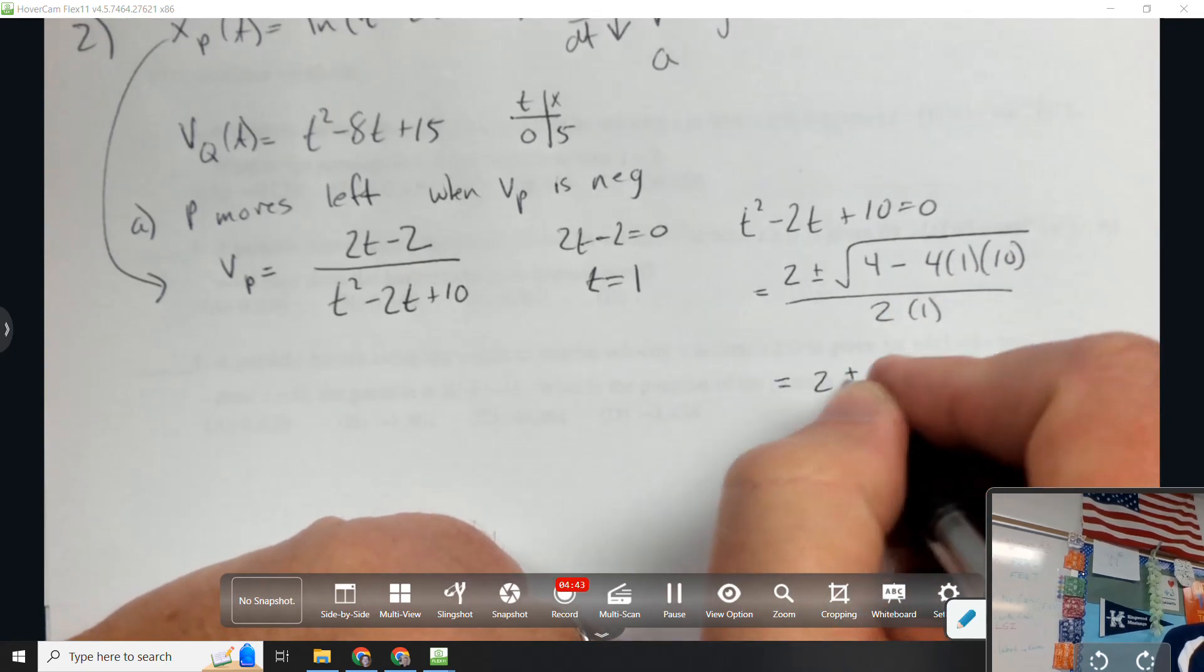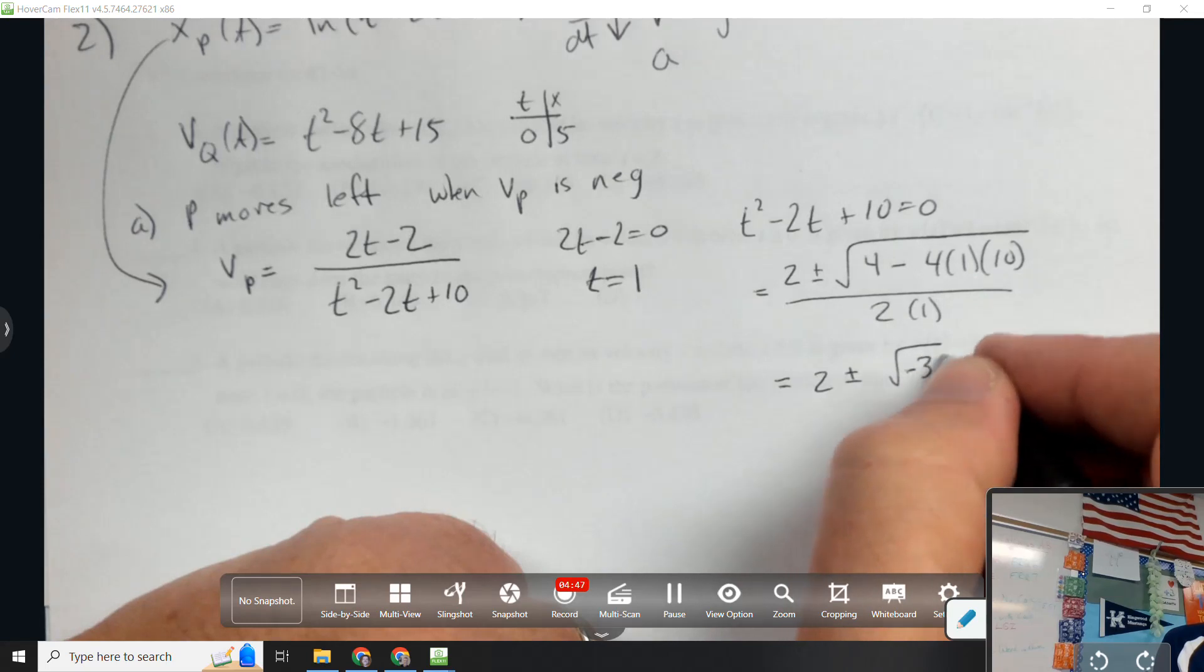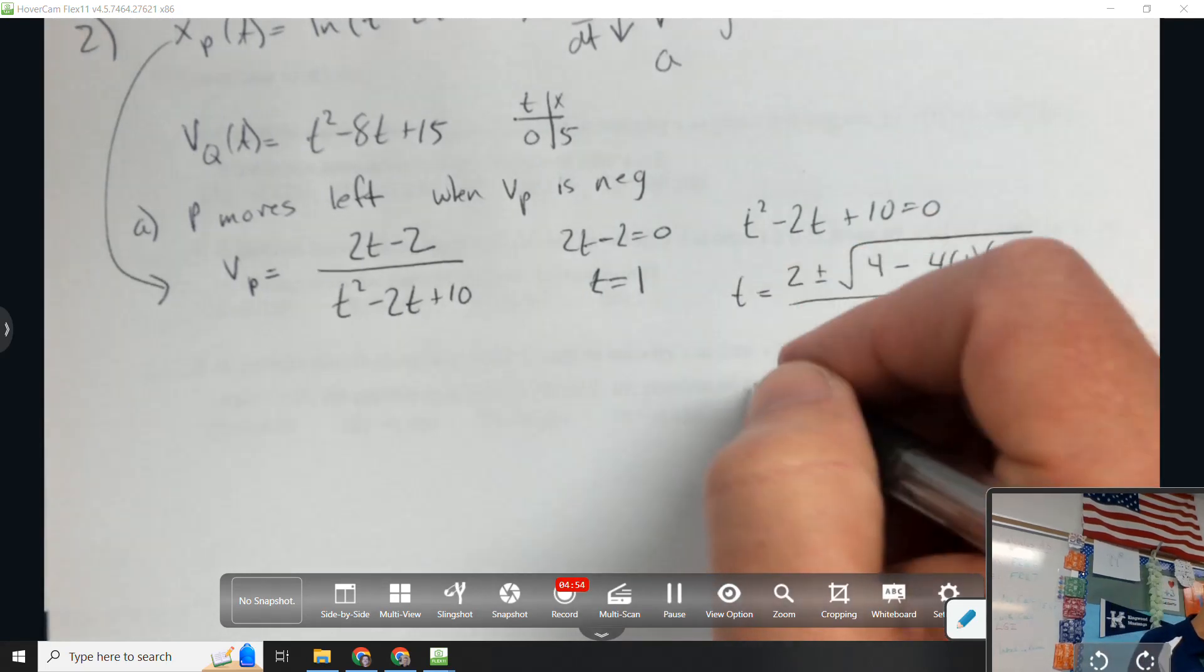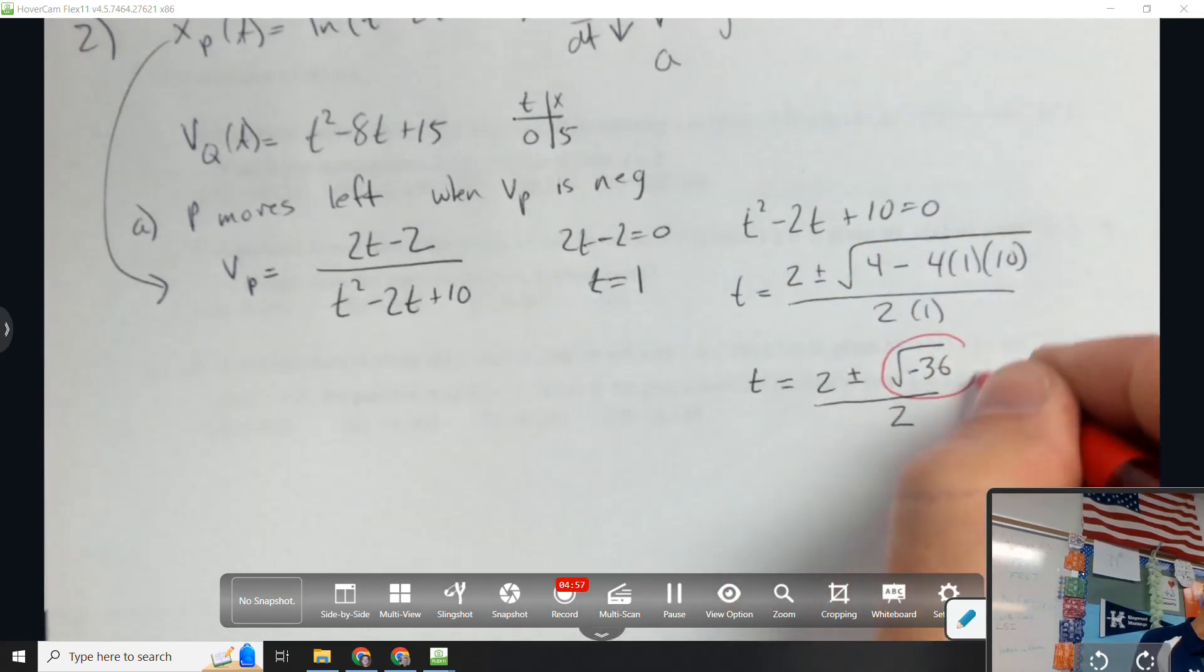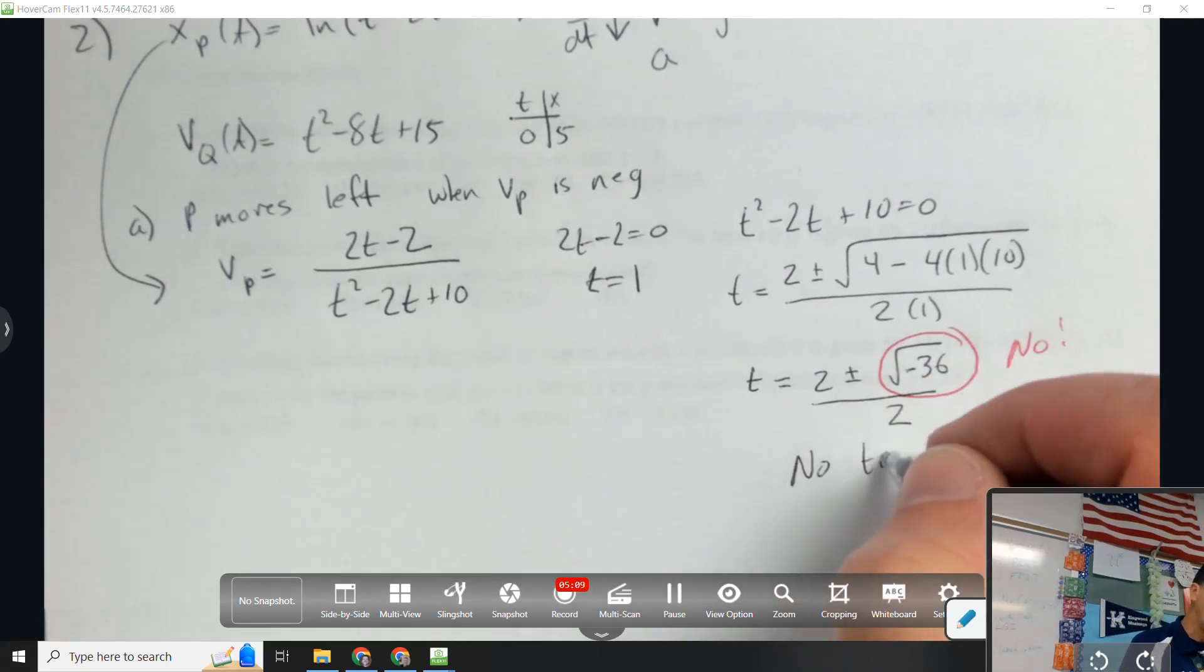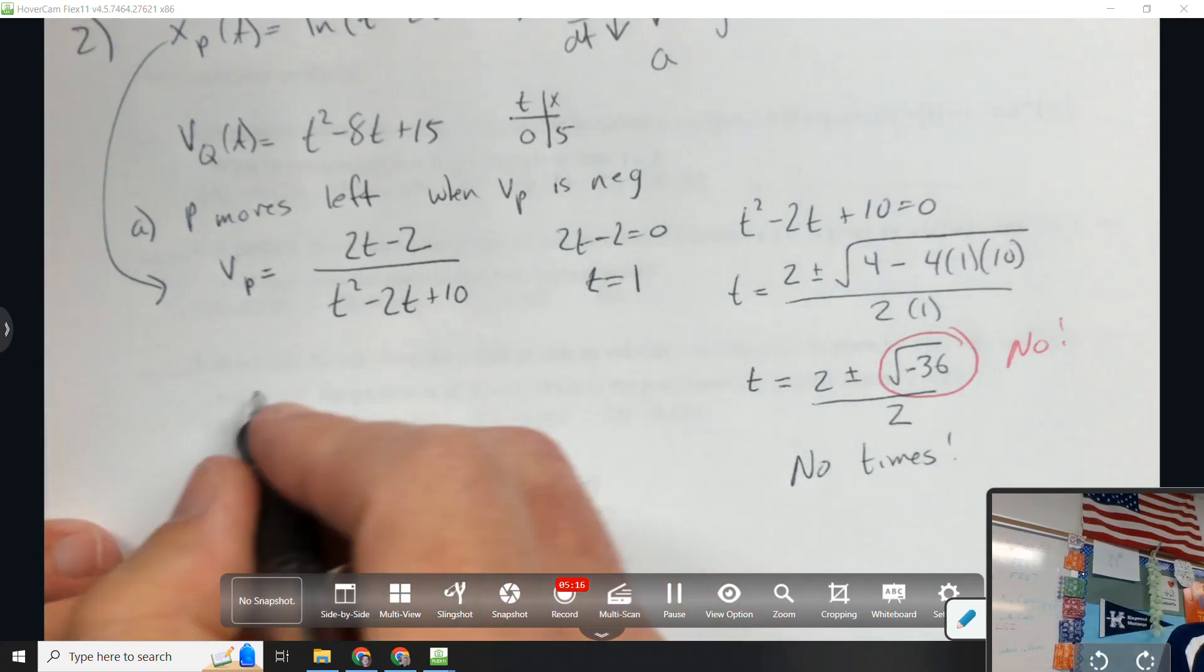T equals negative B plus or minus the square root of B² - 4AC all over 2A. 4 minus 40 is negative 36. Oh, this is good news. Why is that good news? No real numbers there. So this is great. There's no times for where the bottom is 0, so I don't have to worry about it.